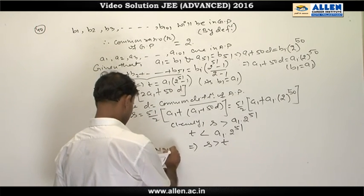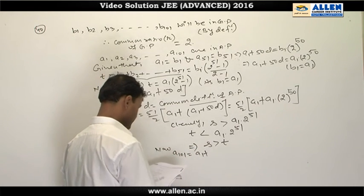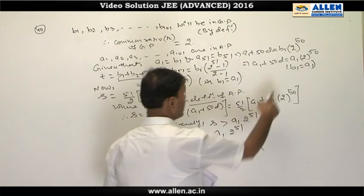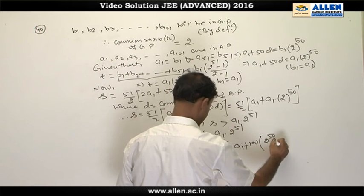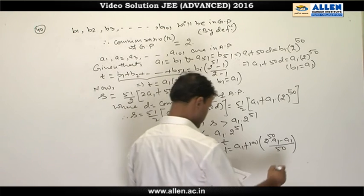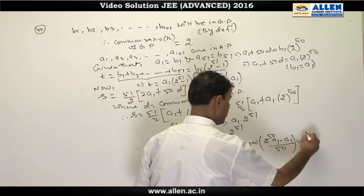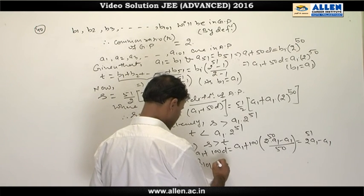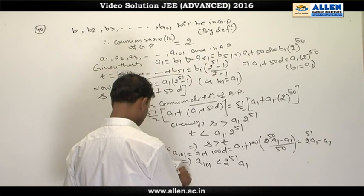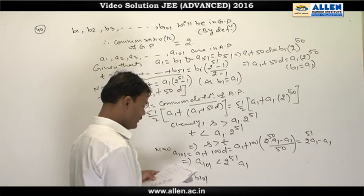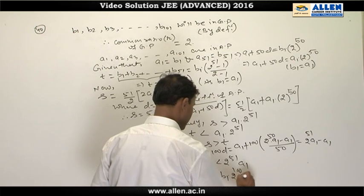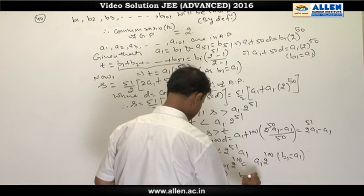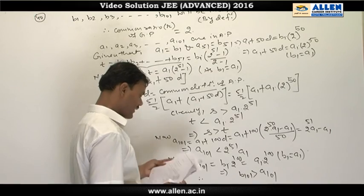Now we find a101 = a1 + 100d. Substituting d = (a1·2^50 − a1)/50, we get a101 = a1·2^51 − a1, which is less than a1·2^51. The 101st term of the GP is b101 = b1·2^100 = a1·2^100, which is clearly greater than a101. Therefore b101 > a101, and option B is the correct answer.